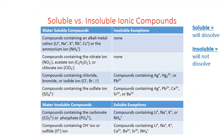Precipitation reactions are driven by the relative solubility or insolubility of the products in water. Ionic compounds are electrolytes because they dissociate into ions when they dissolve in water, but not all ionic compounds will dissolve. There are several notable exceptions, and when these form as products of an aqueous reaction, they will precipitate out in solid form.